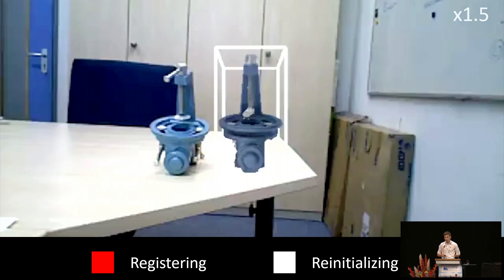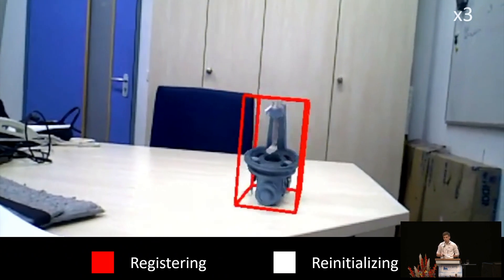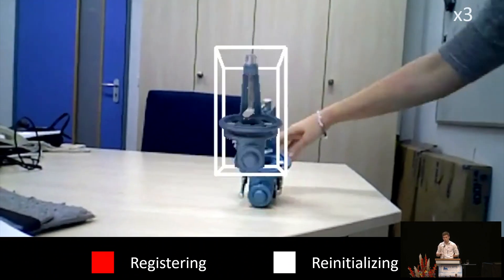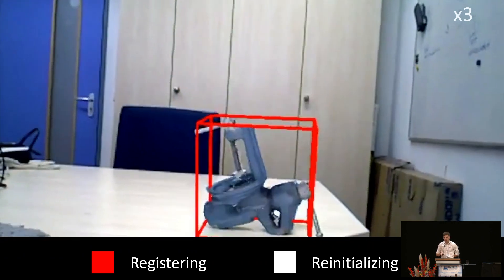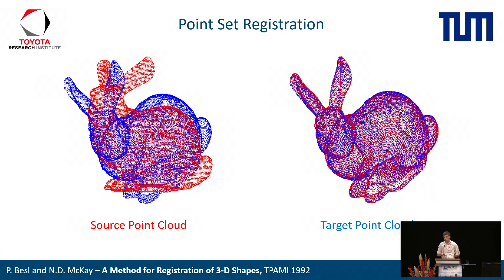We show here how our method performs in practice. On the table we see the object that we want to register to in 6D, and on the right, in the center of the image, we render the 3D model with the current pose hypothesis, highlighted with a white bounding box. After each reinitialization, our method tries to maximize the overlap between the rendering and the real object in the scene. While red illustrates that we are actively registering, the white bounding box depicts that we are re-initializing with a new random pose. We are trying to register a 6-degree-of-freedom hypothesis pose with the target pose, depicted in blue and red respectively.